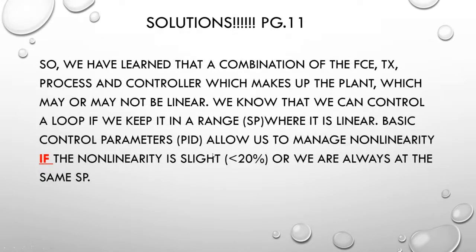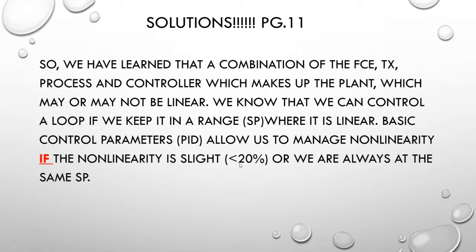So how do we deal with all the potential non-linearities from a process, a valve, or a transmitter? The combination of these things makes up a plant, which may or may not be linear. We know that we can control the loop if we can keep it in a range where it is linear or where we're aware of how it's functioning. Basic PID settings can allow us to manage some non-linearity if it is slight — the ILM states that if it's less than 20% non-linearity, we can generally control it with a PID controller. Or if we're always at the same set point, it should work just fine.